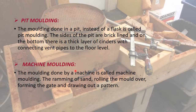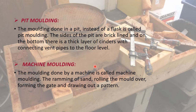In bench molding, floor molding, and pit molding, the different molding operations are carried out manually by the hands of the molder. In machine molding, various operations like sand ramming, drawing the mold, and withdrawing the pattern are done by machines. The molding which is done with the help of machines is called machine molding. Machines perform these operations much faster, more efficiently, and in a much better way.